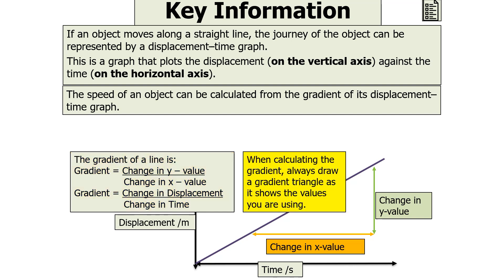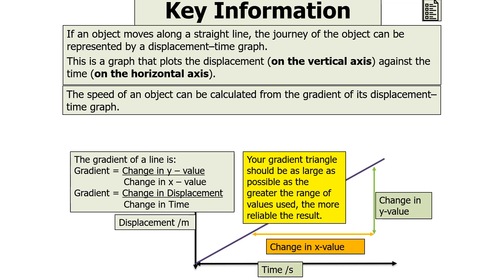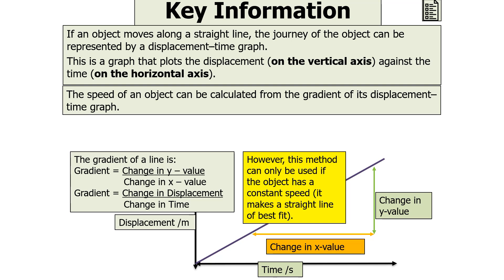When calculating the gradient, always draw a gradient triangle as it shows the values that you are using from your graph. Your gradient triangle should be as large as possible, as the greater the range of values used, the more reliable the result. However, remember this method can only be used if an object has a constant speed, because it will produce a straight line of best fit.